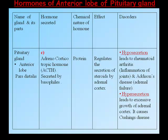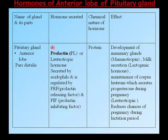Adrenocorticotrophic hormone (ACTH) is secreted by basophils; its chemical nature is a protein. It regulates the secretion of steroids by the adrenal cortex. Hyposecretion leads to rheumatoid arthritis (inflammation of joints) and Addison's disease (adrenal failure); hypersecretion leads to excessive growth of the adrenal cortex and causes Cushing's disease.